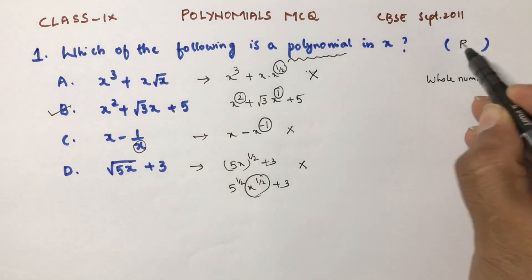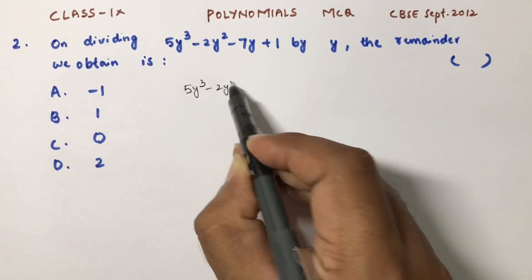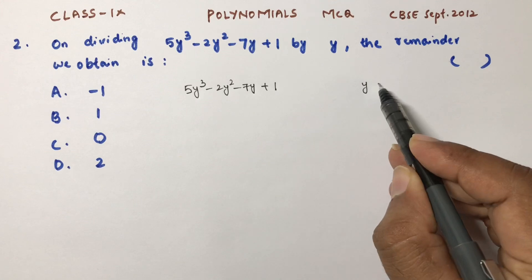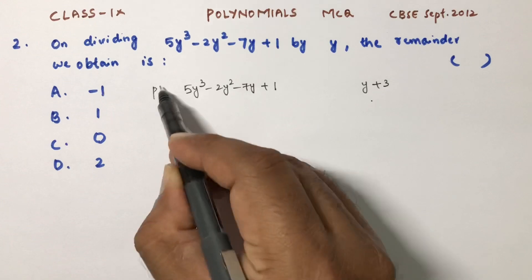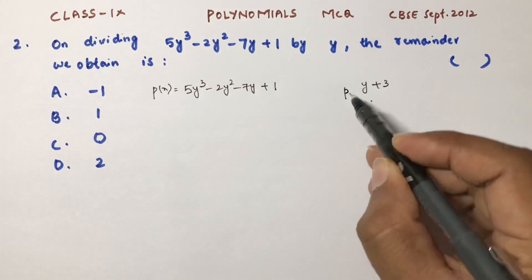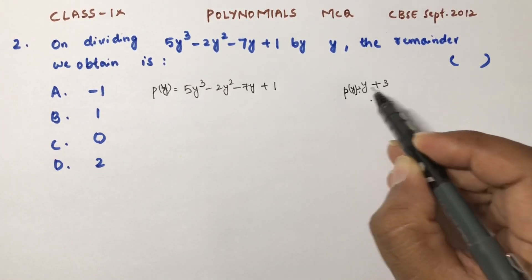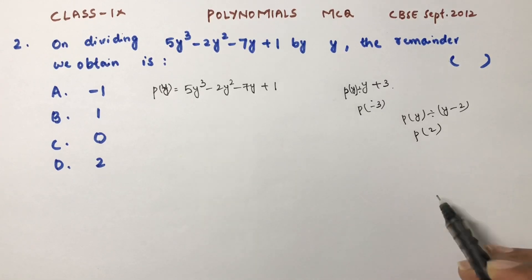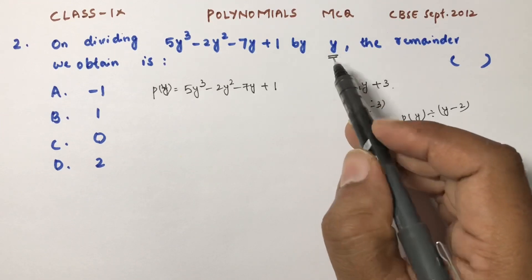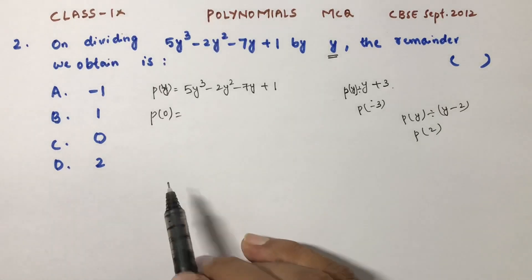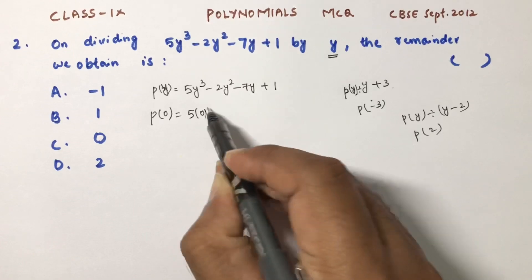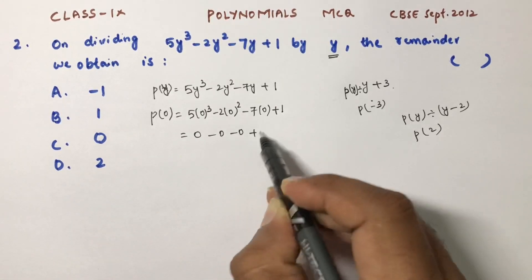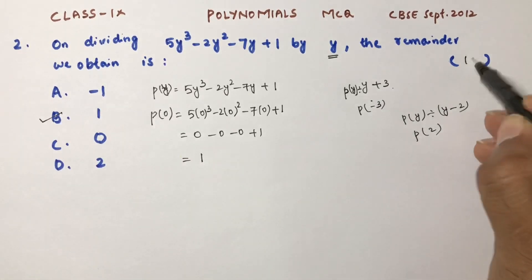On dividing 5y³ - 2y² - 7y + 1 by y: here if a polynomial p(y) is divided by y + 3, you substitute -3; if divided by y - 2, you substitute +2. Here we have only y, so the constant is 0 — find p(0). So: 5(0)³ - 2(0)² - 7(0) + 1 = 0 - 0 - 0 + 1 = 1. The correct option is B.